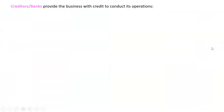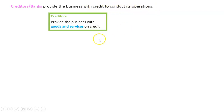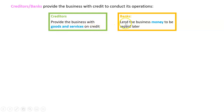Let's first of all figure out who they are. Well, banks are pretty obvious — you've probably heard of a bank. But what is a creditor? These are businesses that provide the business with credit to conduct its operations. If you're doing accounting, this is called accounts payable — it's the same thing. They provide the business with goods and services on credit, which is slightly different to a bank.